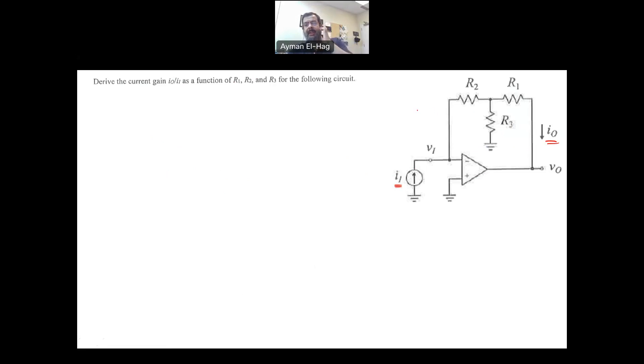When it comes to op-amp questions, you need to identify each node as a given value or as a variable. For an ideal op-amp, the current here equals zero and the current here equals zero as well. These two nodes are equal to each other.